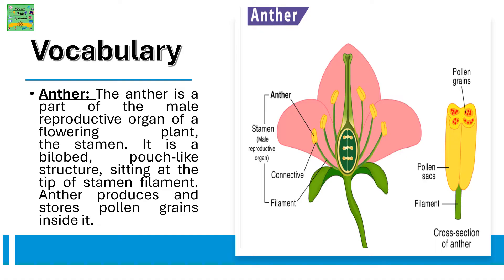The anther is a bilobed, pouch-like structure sitting at the tip of the stamen filament. There are two parts of the stamen: the anther and the filament. The anther produces and stores pollen grains inside it.